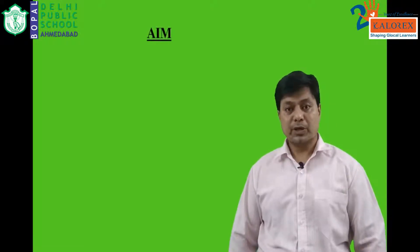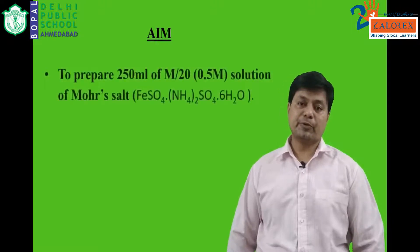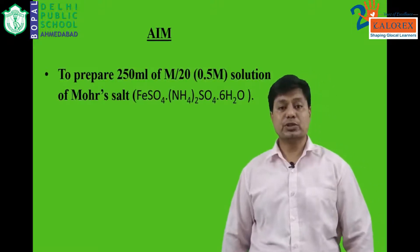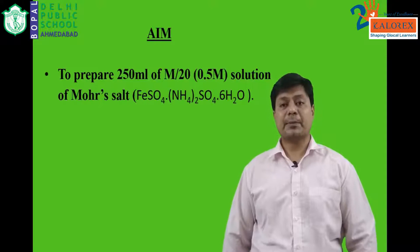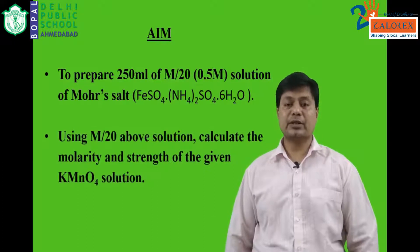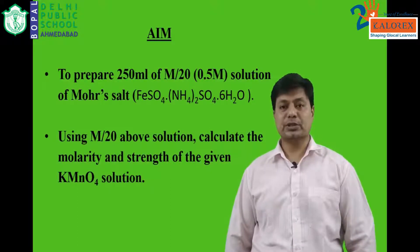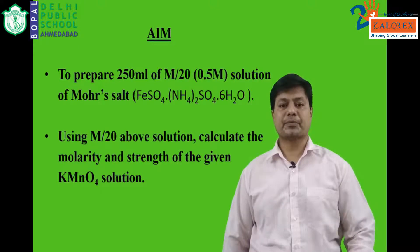Hello students, in today's practical we are going to study the redox titration between KMnO4 and Mohr salt. Let us read out the aim. First of all, we have to prepare 250 ml M by 20, that is 0.05 molar solution of Mohr salt. Mohr salt is a double salt. By preparing that Mohr salt, we have to calculate the strength and molarity of the unknown KMnO4 solution given to us.